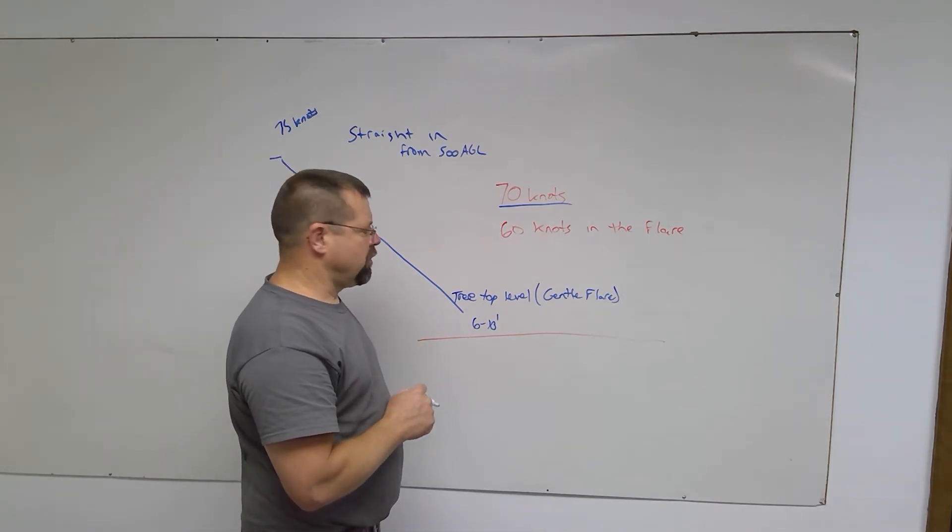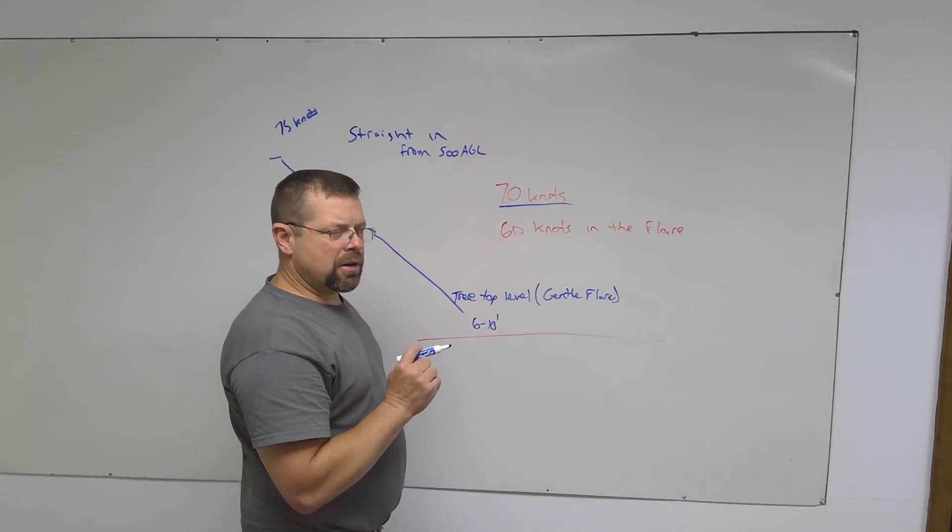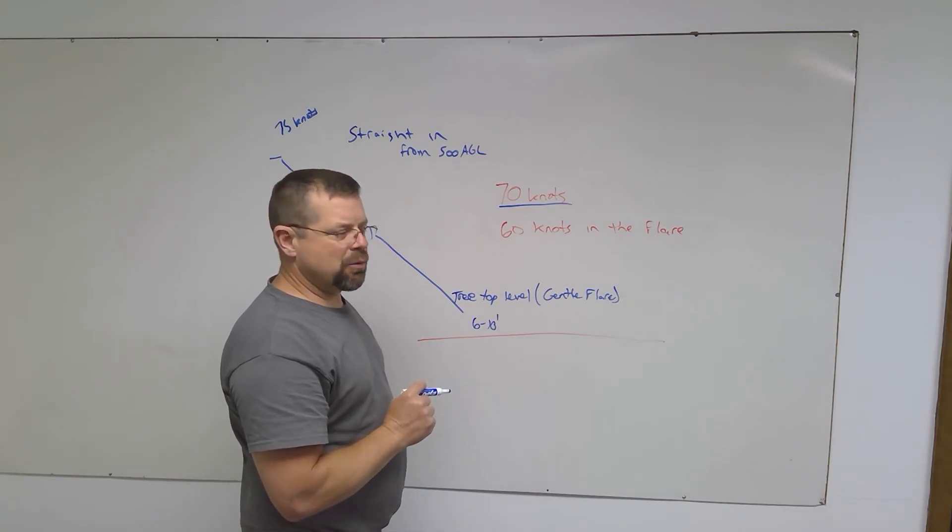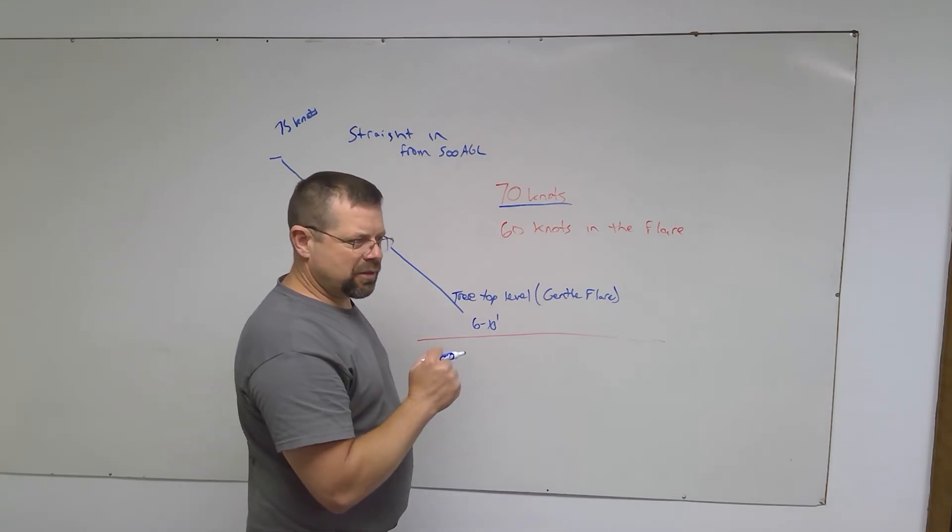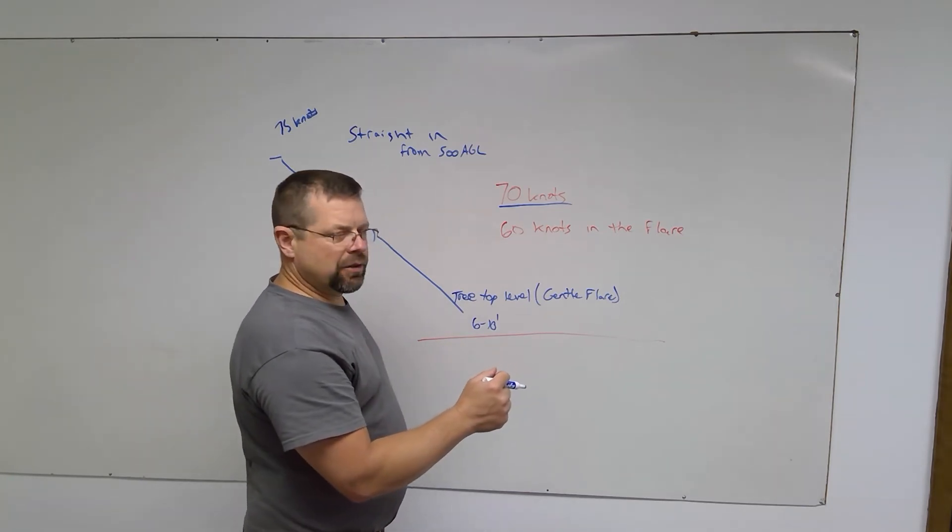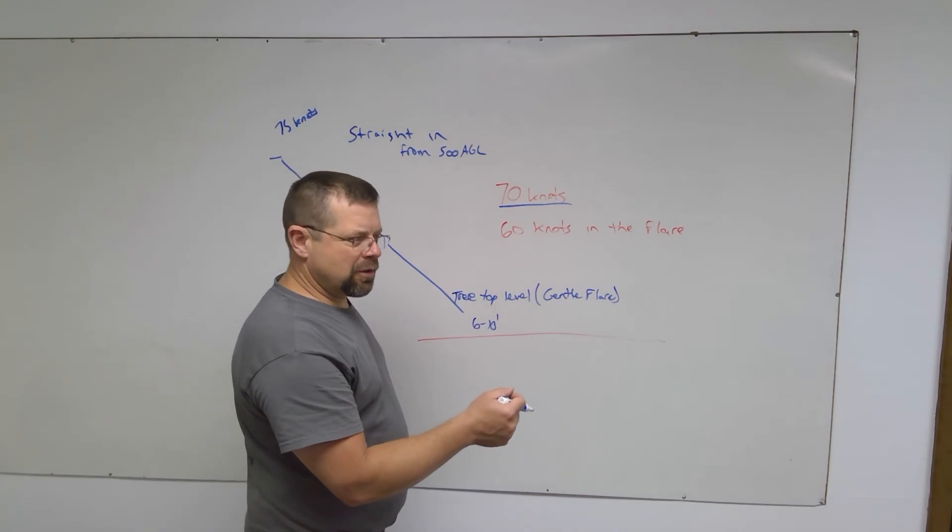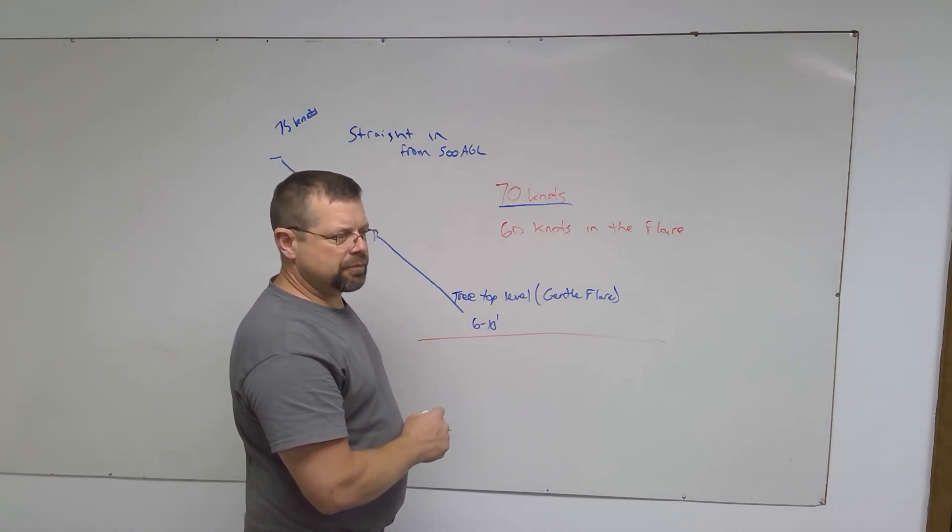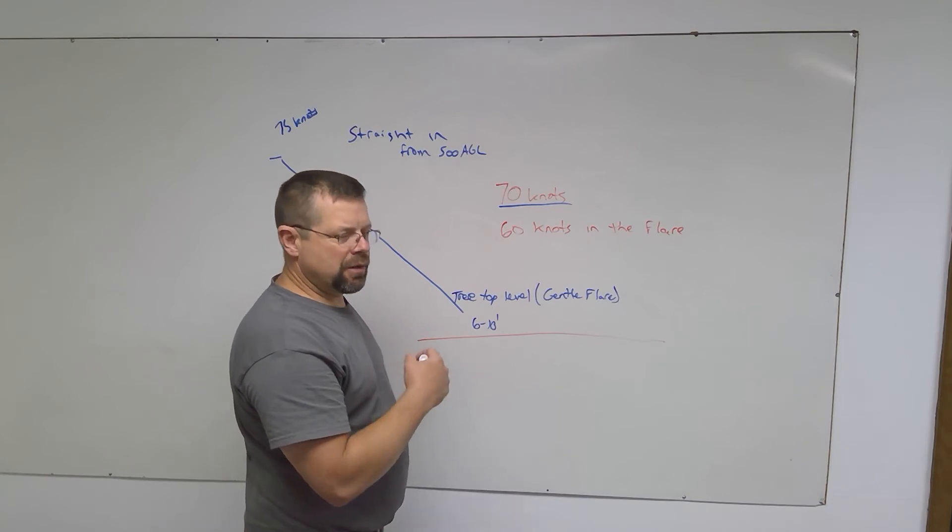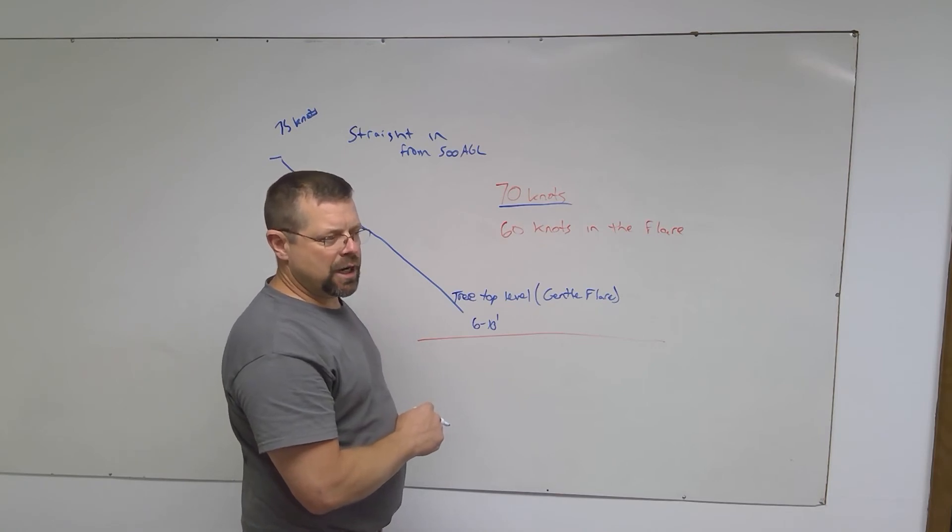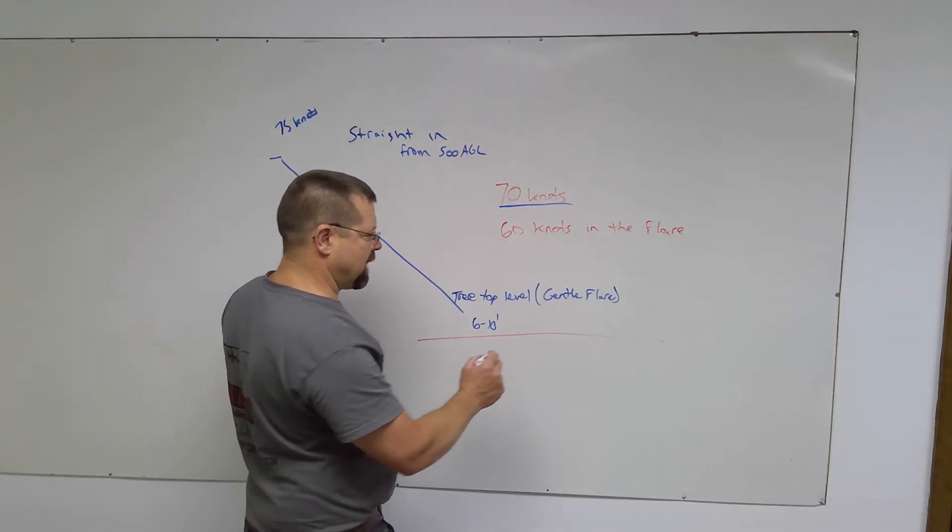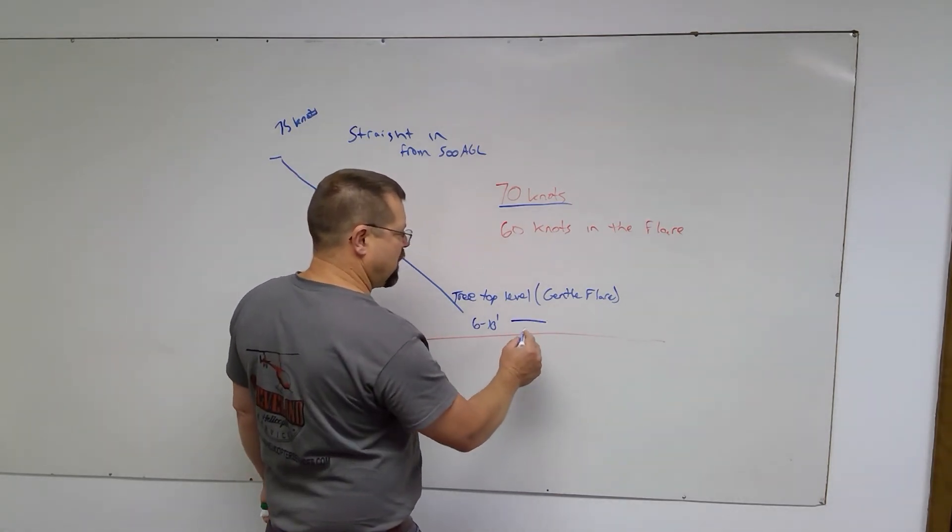The aircraft will continue to settle, and prior to the tail striking the runway, level the ship. During the level process, join the needles so that when the ship is level, you can bring the aircraft back into a hover. By joining the needles, I mean add the throttle, get the needles joined back in the green, the operating range, so that when the ship is level, you're back into a hover.